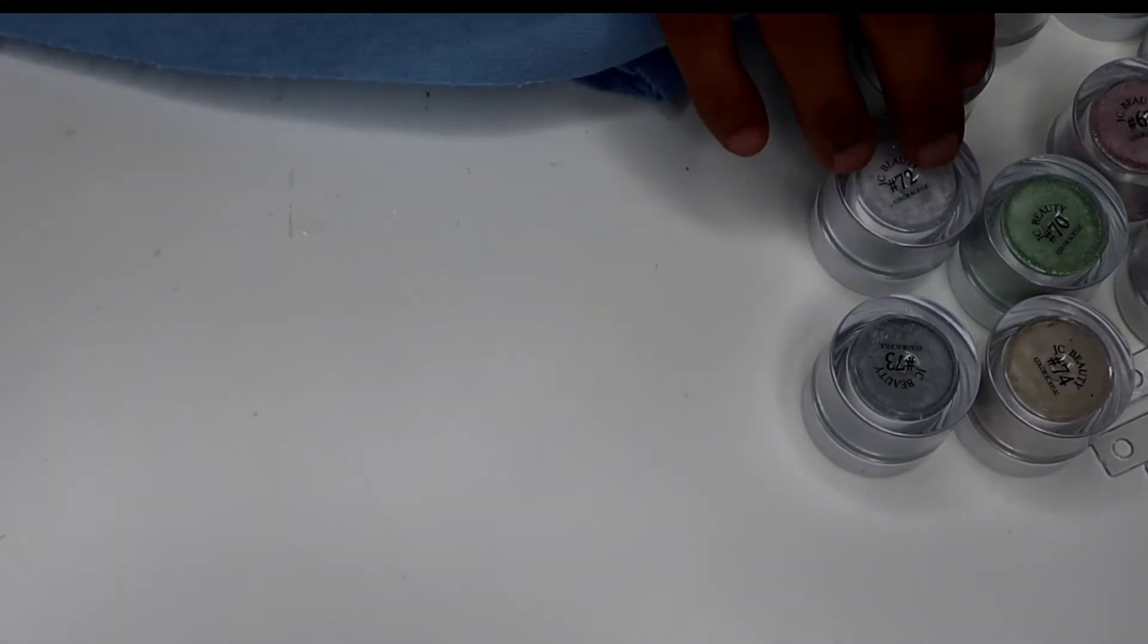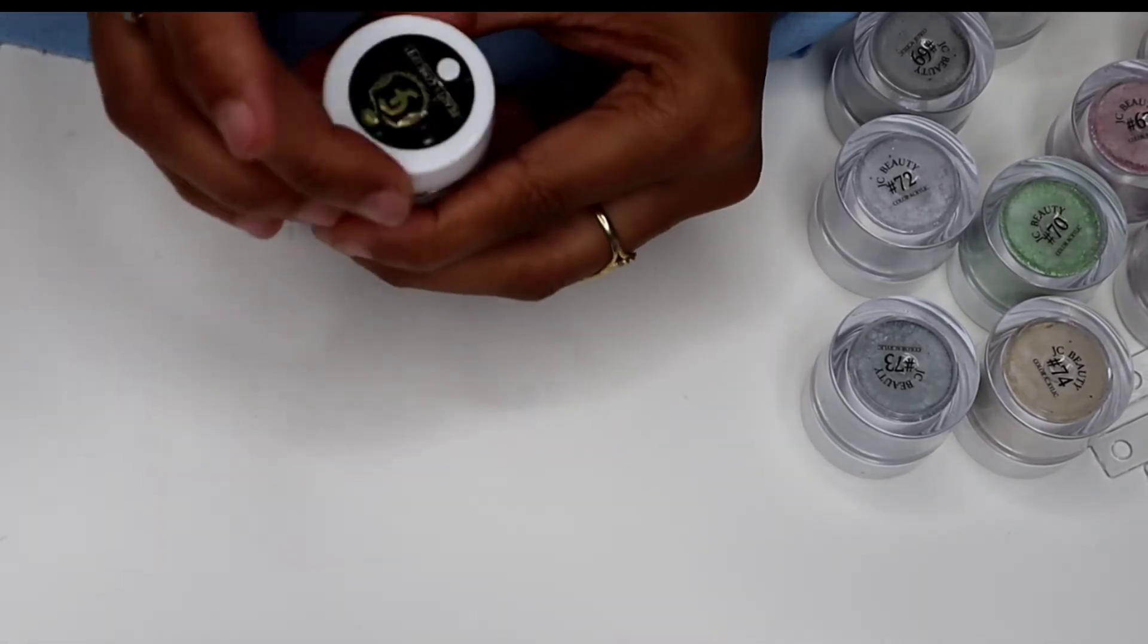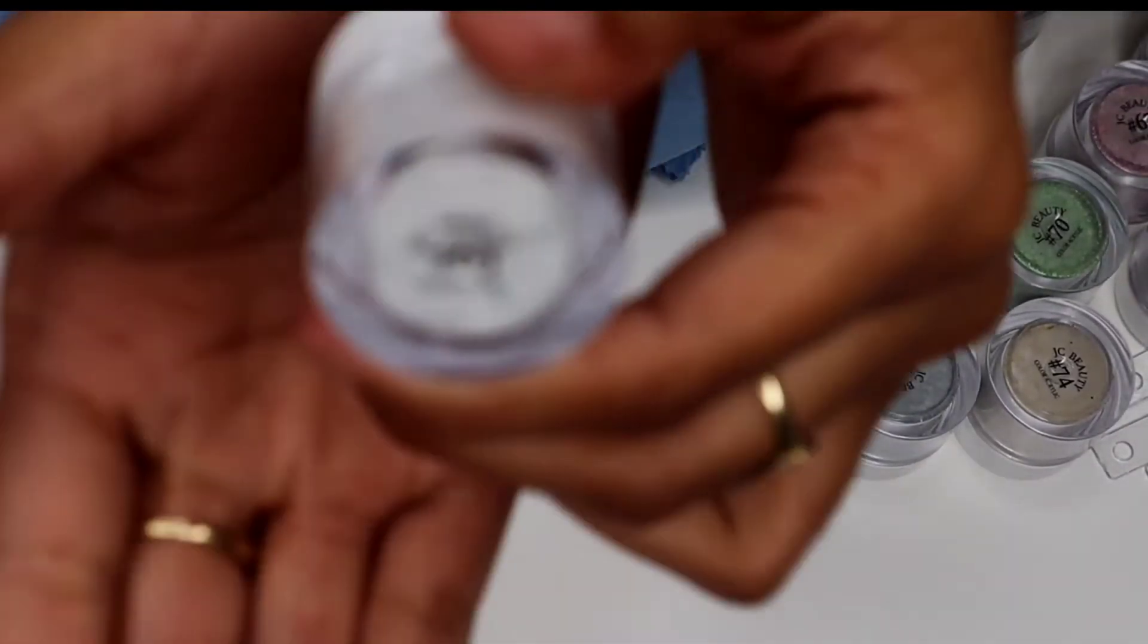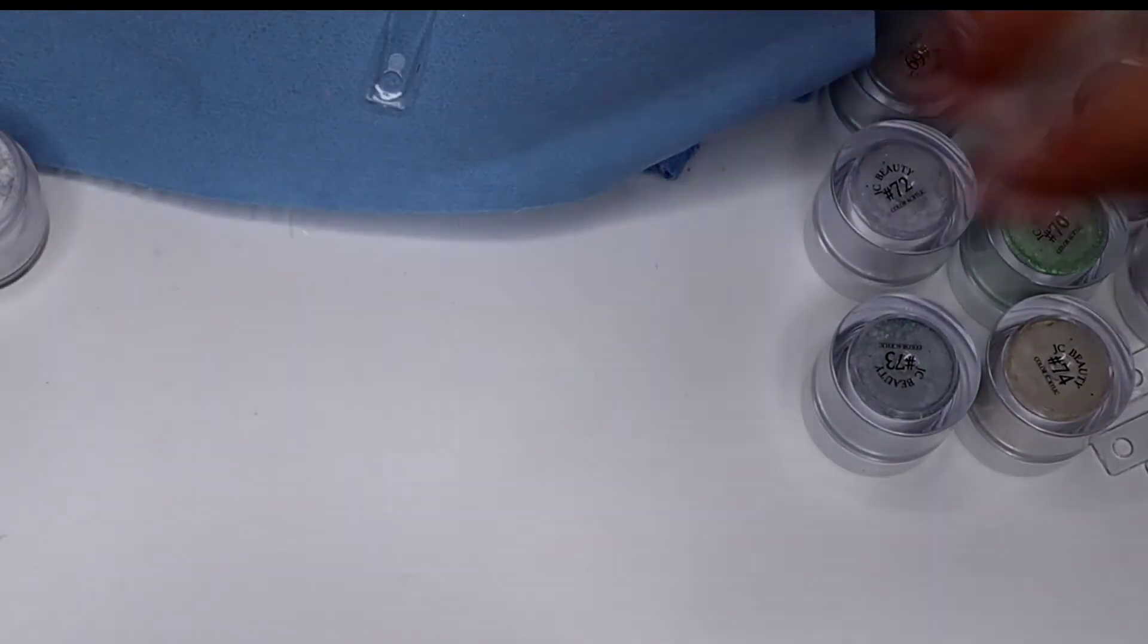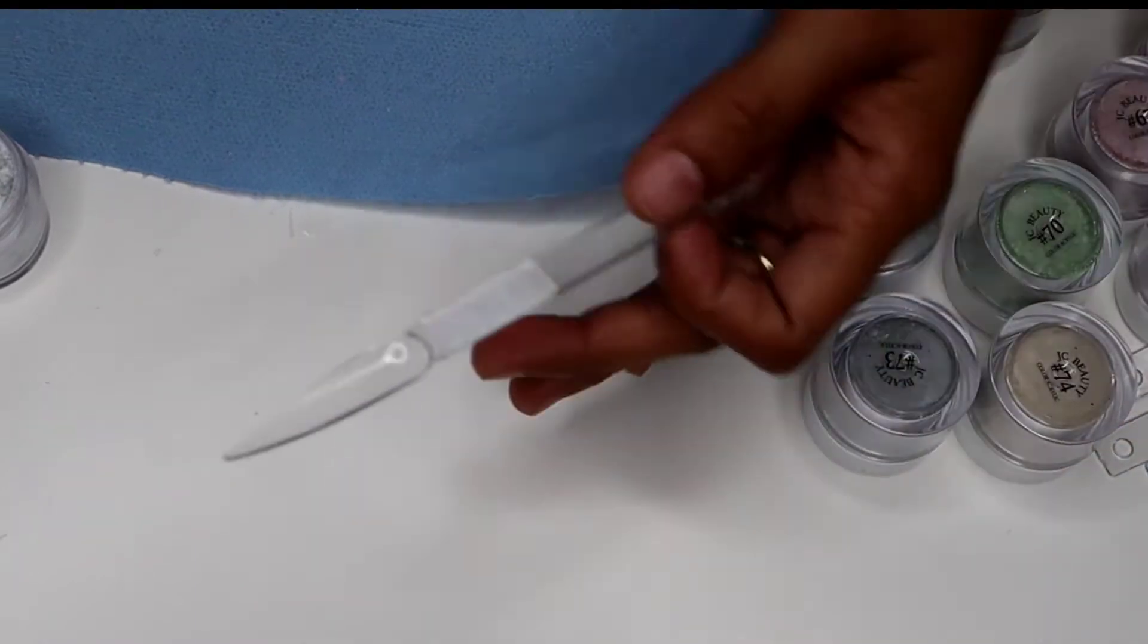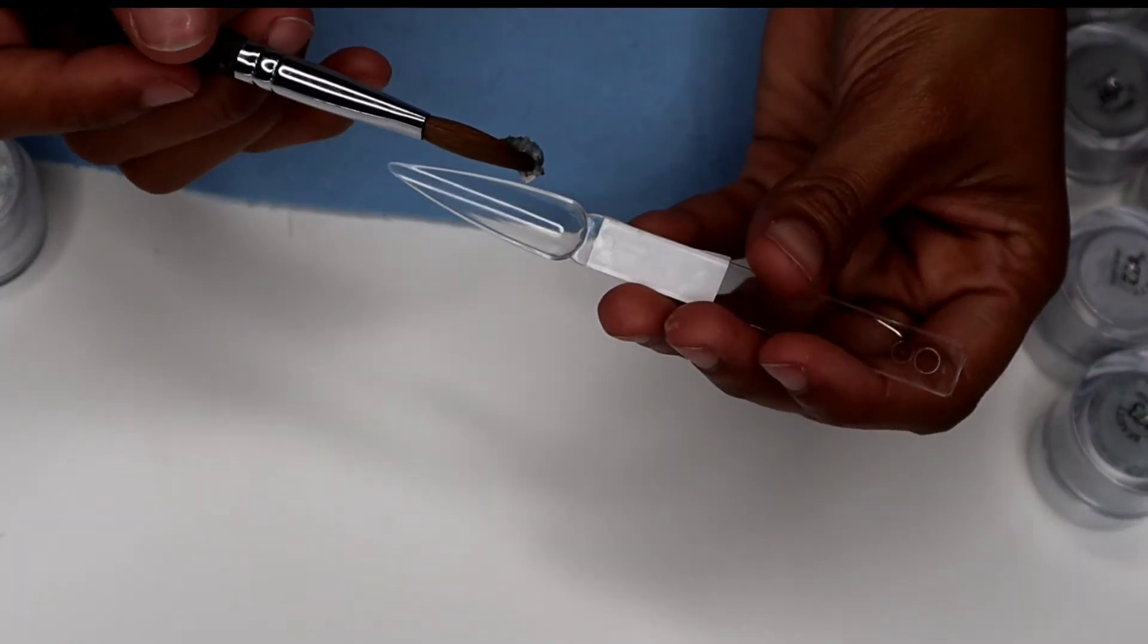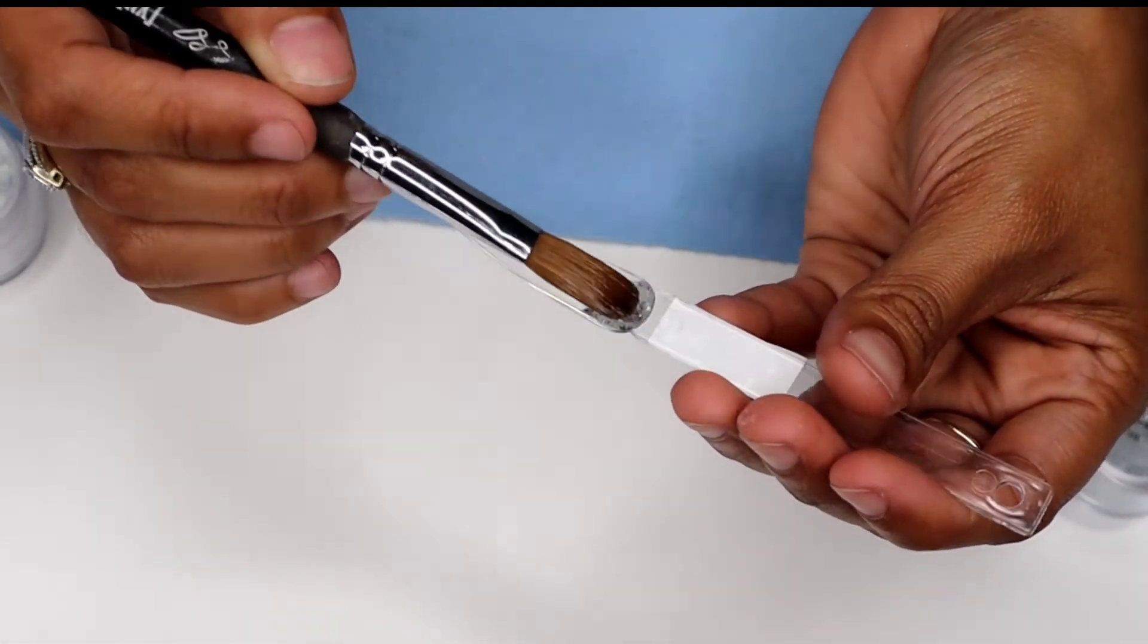Alright, we'll start with number 63. So you can see the number. I don't know what's up with the camera not focusing where it needs to focus, so hopefully this works. This has chunky glitters.